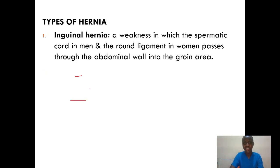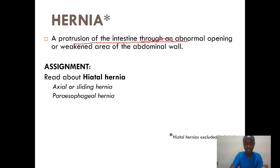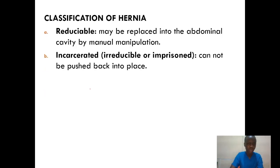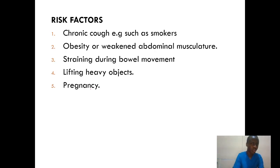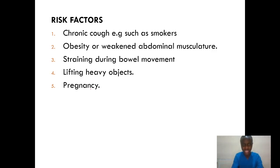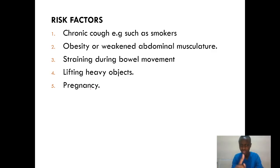What are the risk factors that can predispose one to hernia? First, chronic cough — mainly in smokers. Second, obesity: obese people are linked to weakened abdominal musculature, putting them at risk. Third, straining during bowel movements — straining too much during voiding is a risk factor. Fourth, heavy lifting: bodybuilders and people who lift heavy objects are at risk of developing this condition.